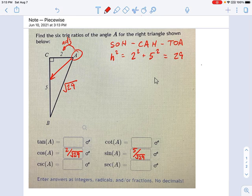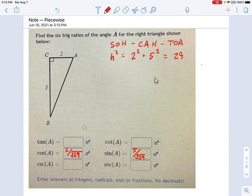And tangent might be the easiest one of all. That's just opposite over adjacent. So what's the opposite and what's the adjacent? That just means this is 5 divided by 2.